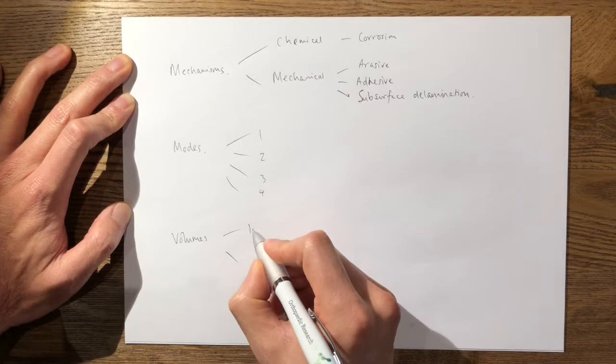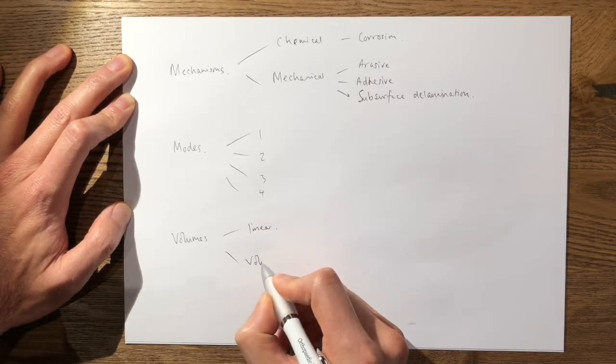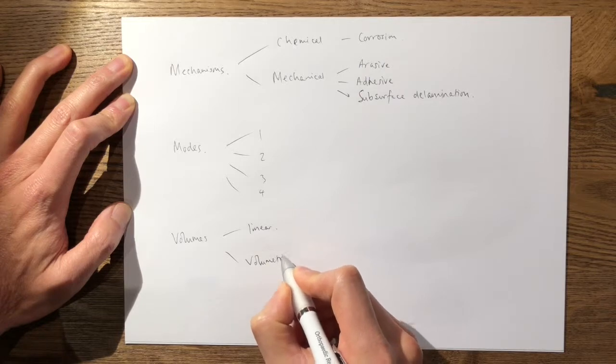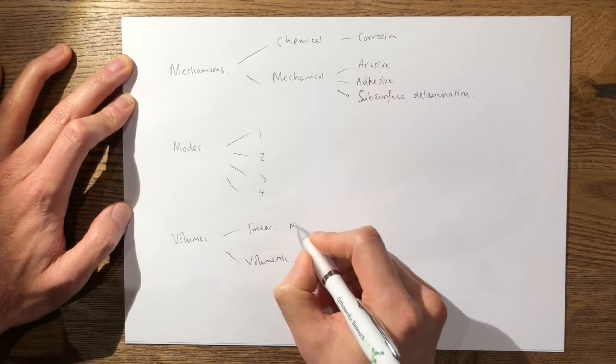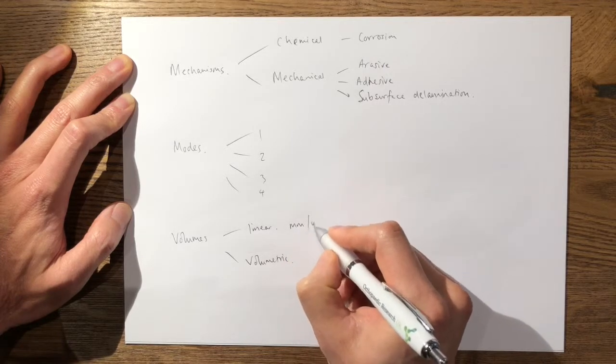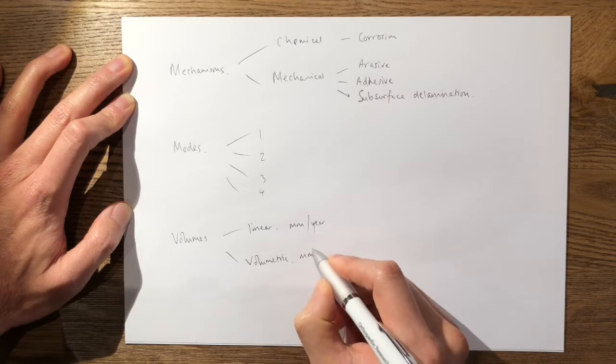Volumes of wear can largely be divided into linear and volumetric. The important difference here is that linear is measured in millimeters per year, and volumetric is measured in millimeters cubed per year.